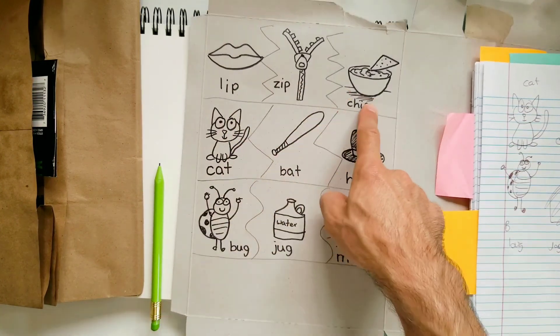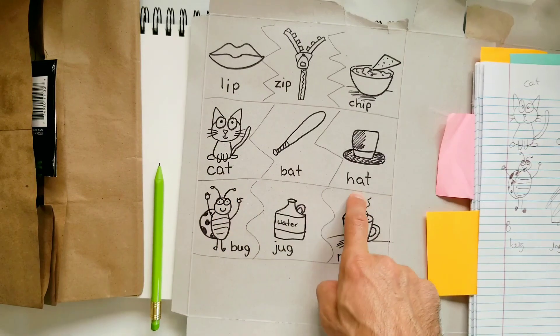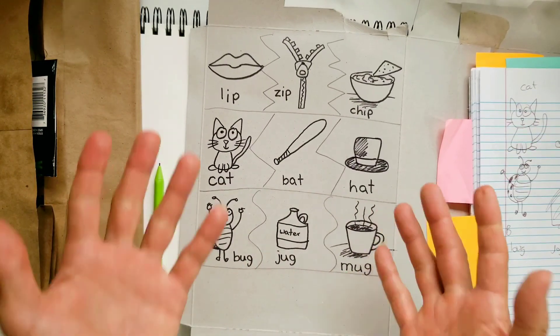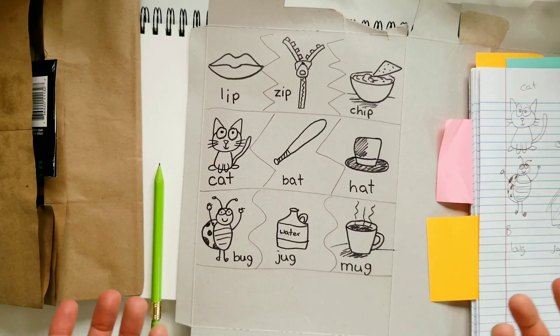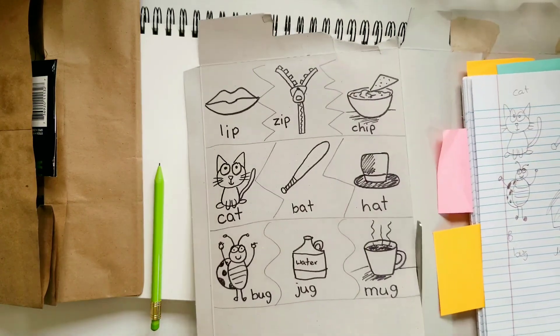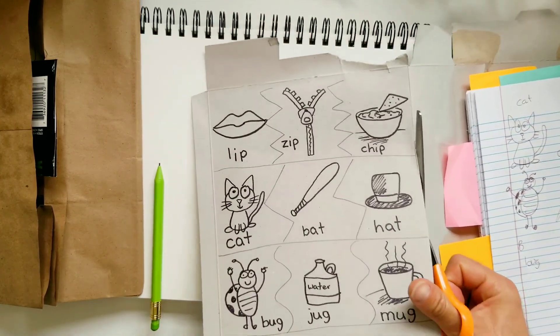So now we have lip, zip, chip, cat, bat, hat, bug, jug, mug. So we are rhyming time in. Okay, so now what we're gonna do is we're gonna take these, and since we did it on our cardboard, we can cut it and it'll turn into a game piece.